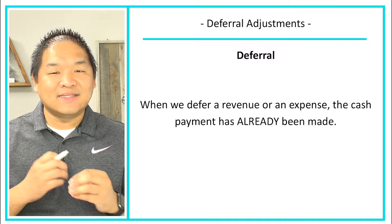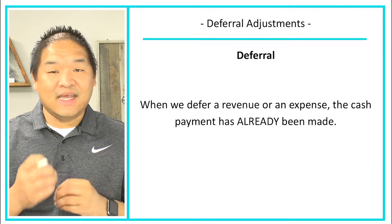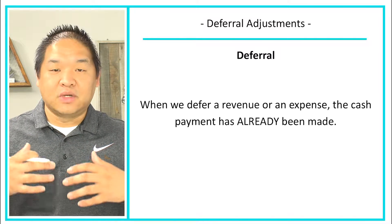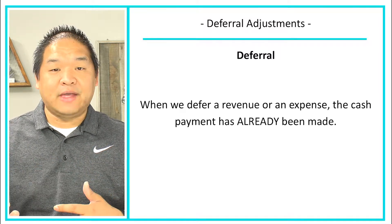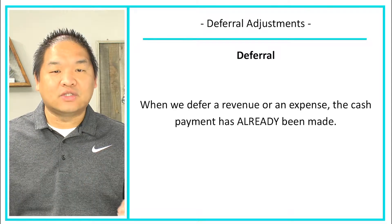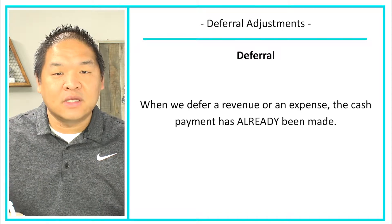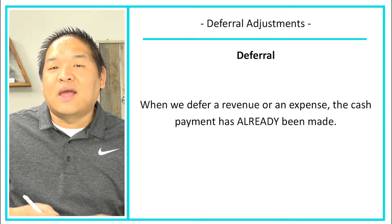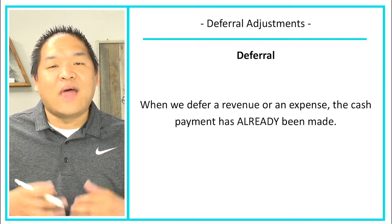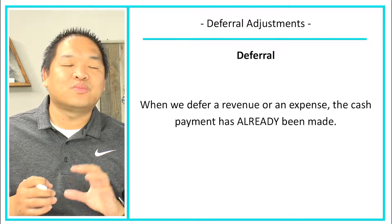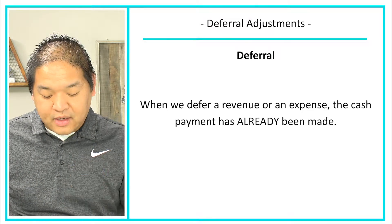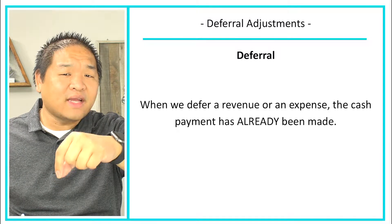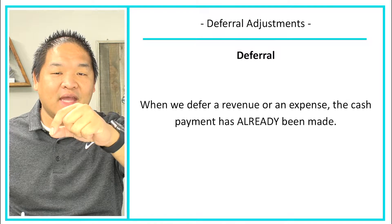We're not talking about instantaneous situations here. An instantaneous transaction doesn't require a deferral adjustment — we just book the cash and the revenue, or the cash and the expense. This is a situation where we have a timing difference. There must be a significant timing difference — more than a day or two. Something instantaneous, like within hours, probably wouldn't require this. The cash payment is made before the actual recognition of the income or the expenses.